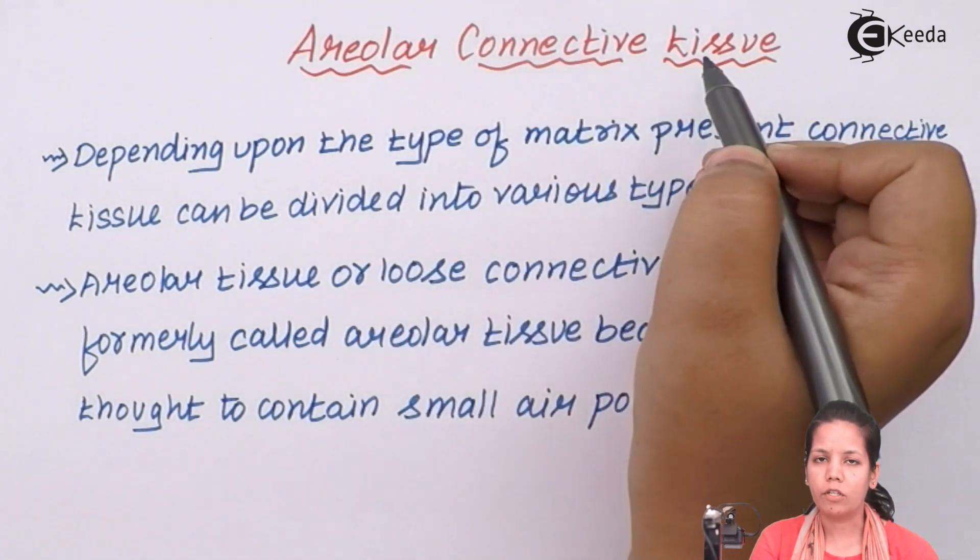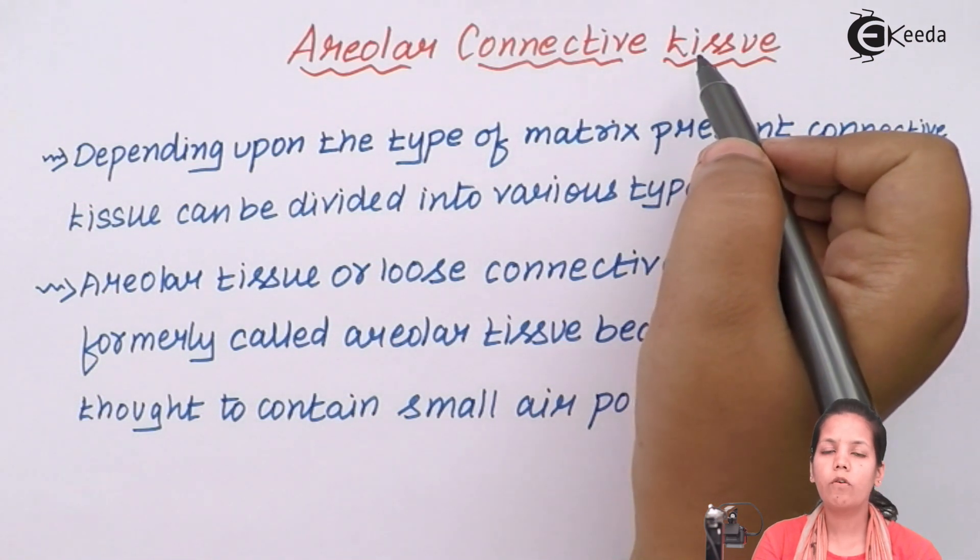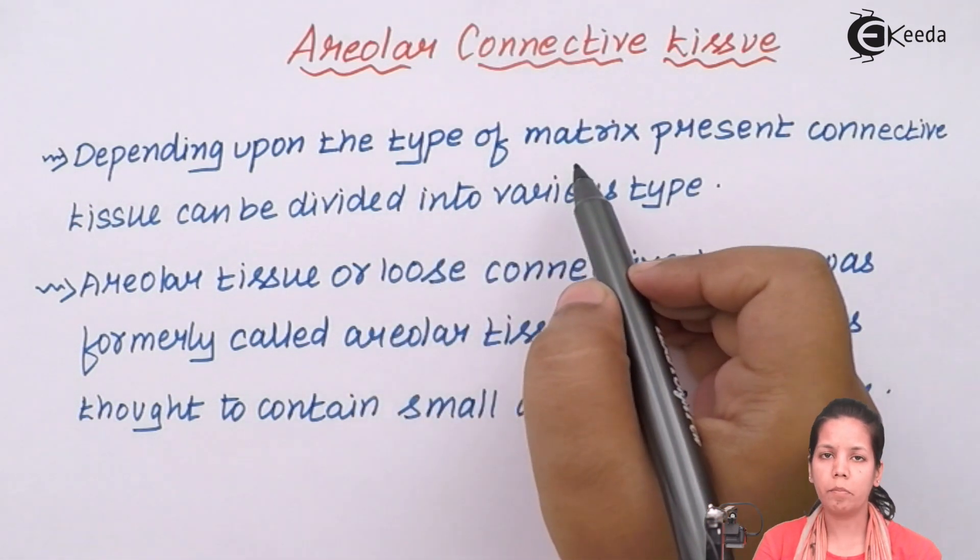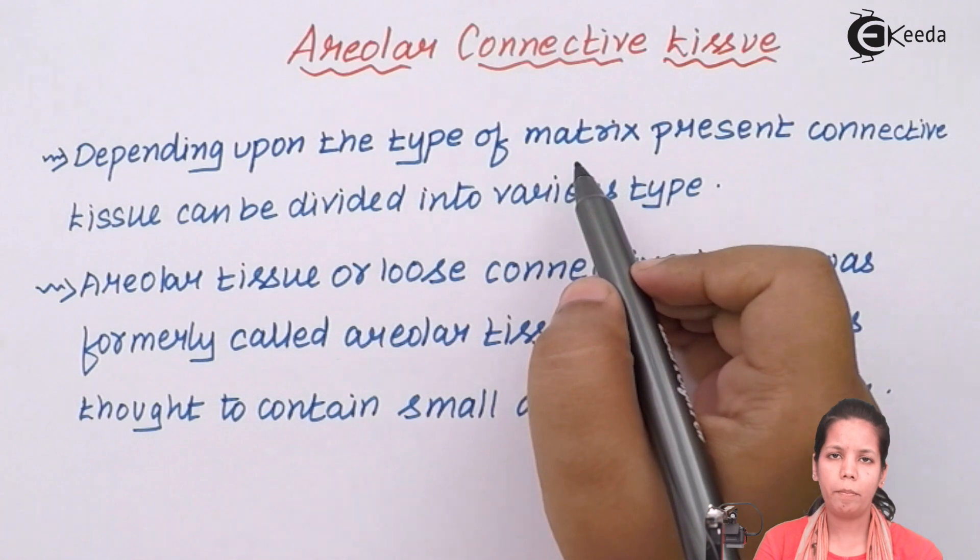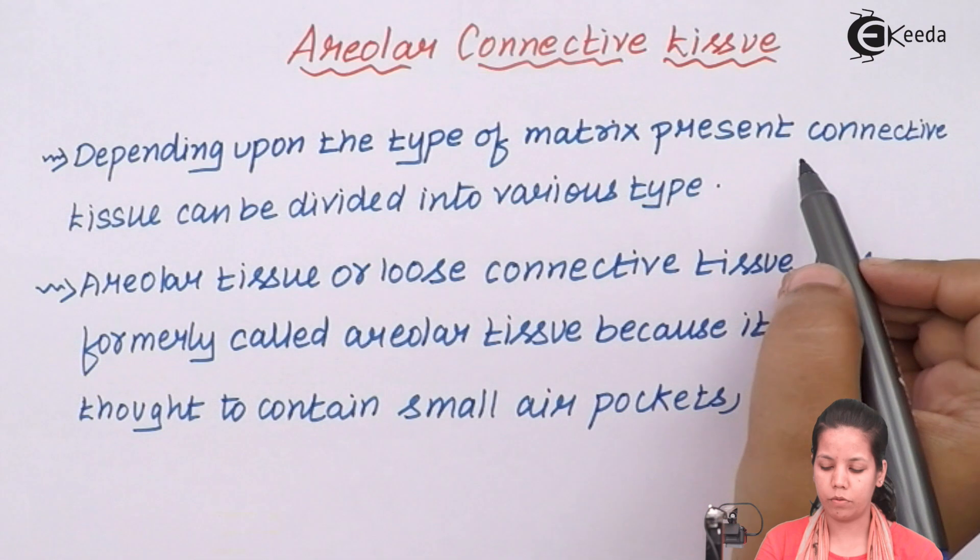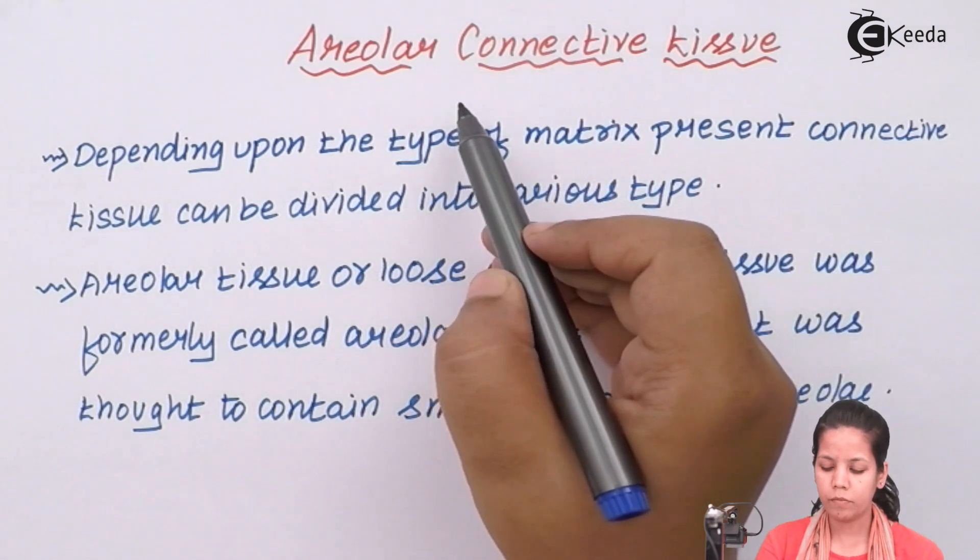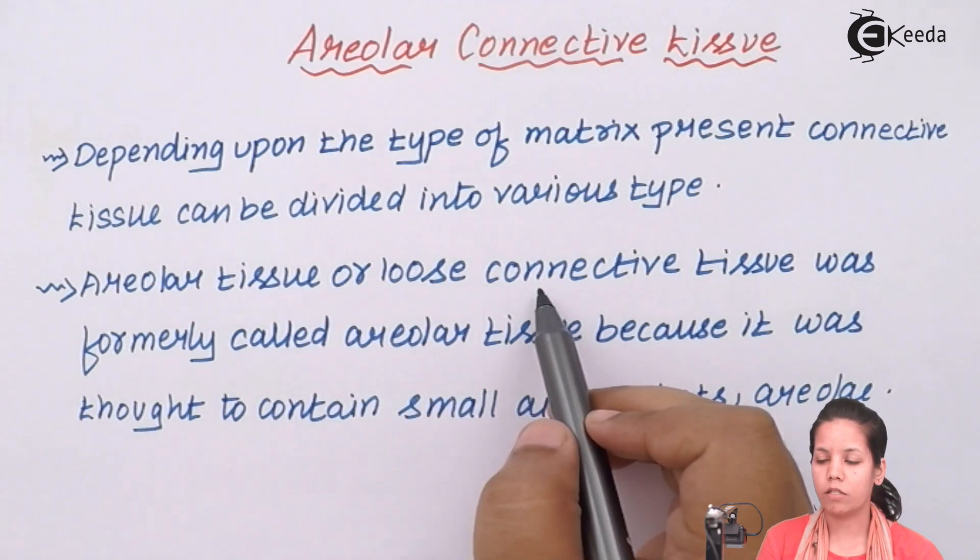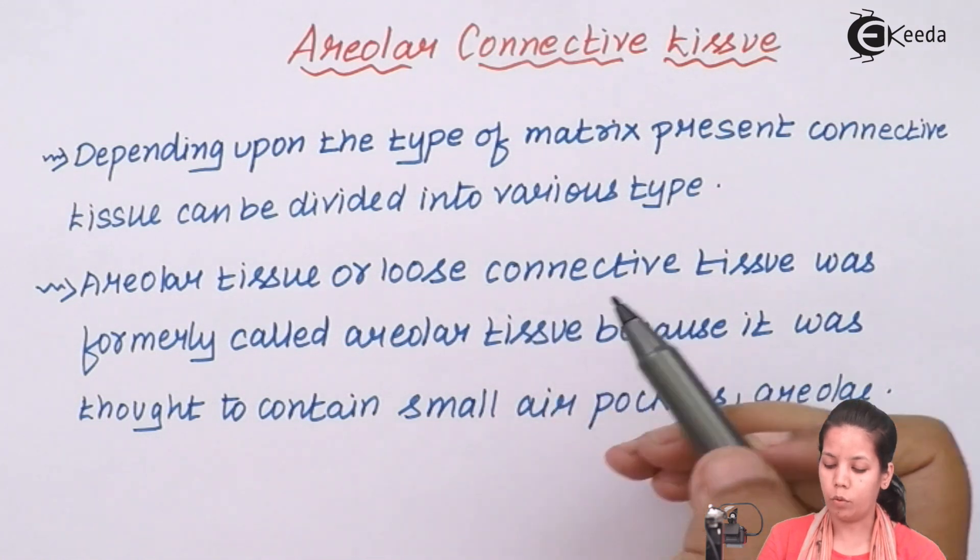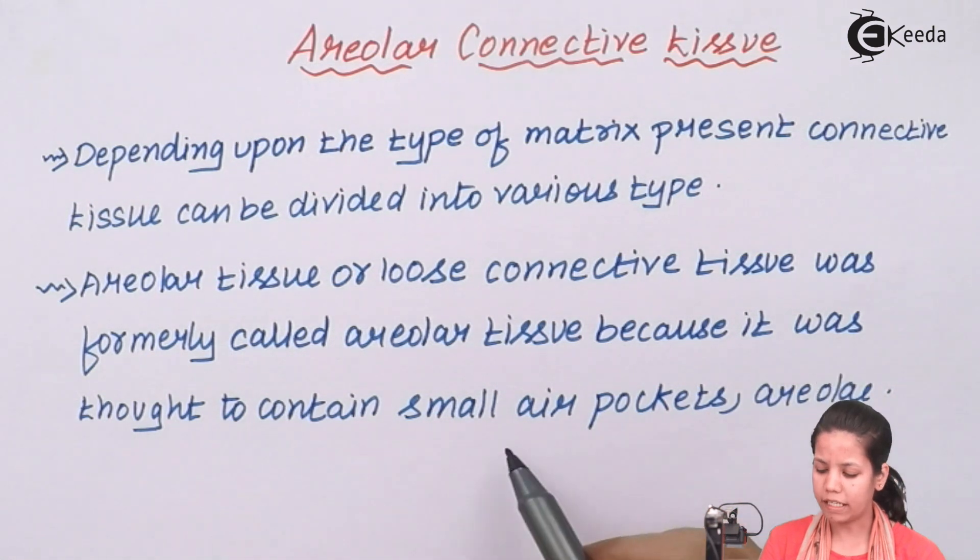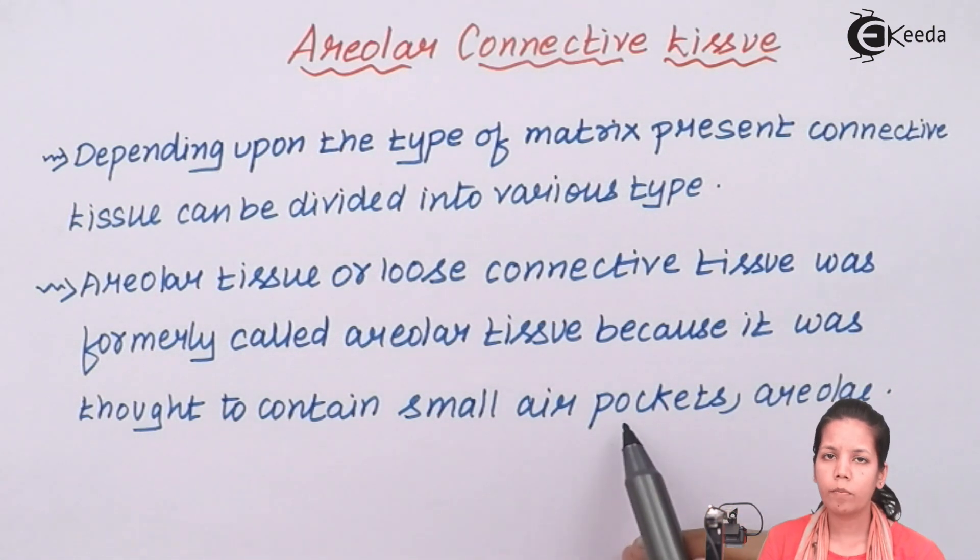Areolar connective tissue. Now when I speak about this tissue, it is a form of connective tissue. Now depending upon the type of matrix or you simply say grounding substance present in a kind of a tissue, connective tissues can be divided into various groups and one of them is your areolar tissue. Now areolar tissue is also termed as loose connective tissue and being it called as loose connective tissue, it was formerly called as areolar tissue because it was thought to contain small air pockets or small air packages or you simply say areolar.